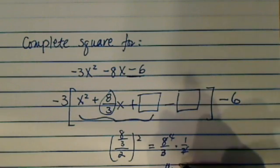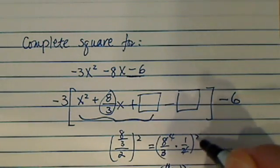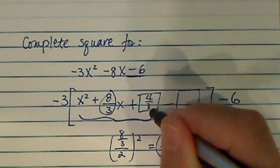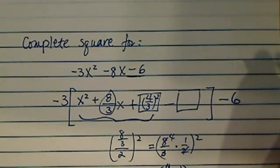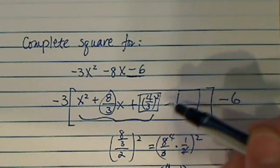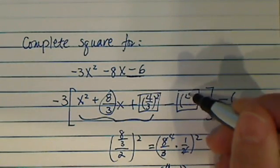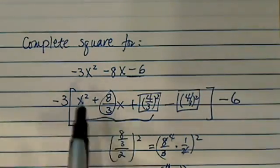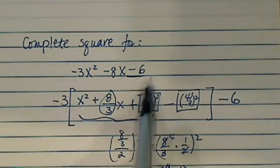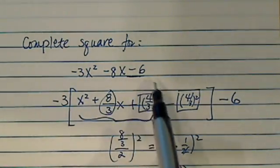So it's really 4 over 3 and we're going to square this whole thing. So we're just going to put 4 over 3 squared. Since I added a 4 over 3 squared, I better subtract it because otherwise I changed my original equation or original expression over here.